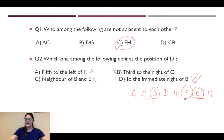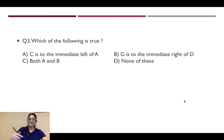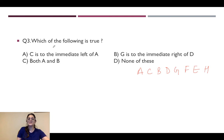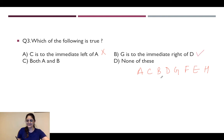Moving on, the last question for this arrangement asks: which of the following is true? First: C is to the immediate left of A — no, C is to the immediate right of A, so that's wrong. Second: G is to the immediate right of D — yes, that is true. So that is the correct answer. You can verify the options: both A and none of these are not correct. The correct option is G is to the immediate right of D. So this was an easy one.